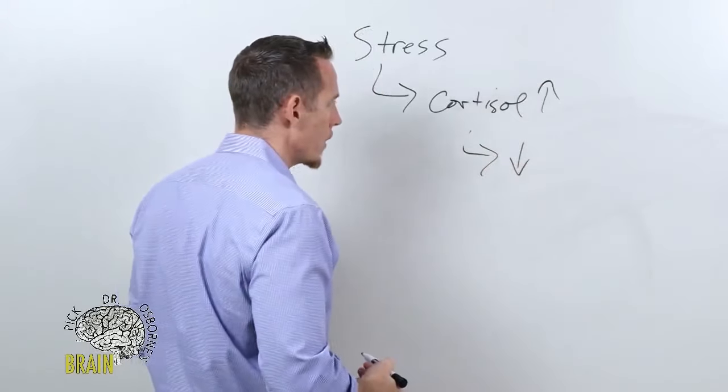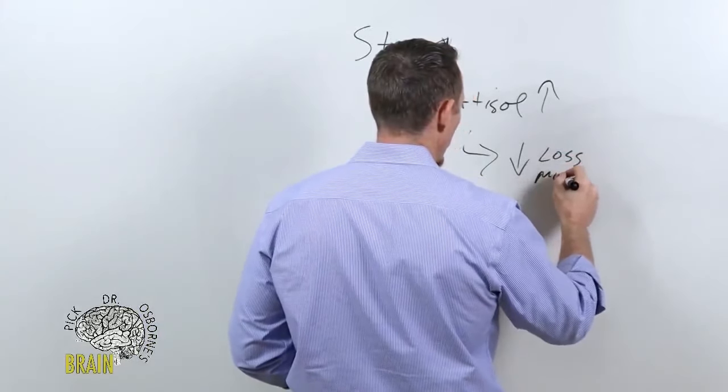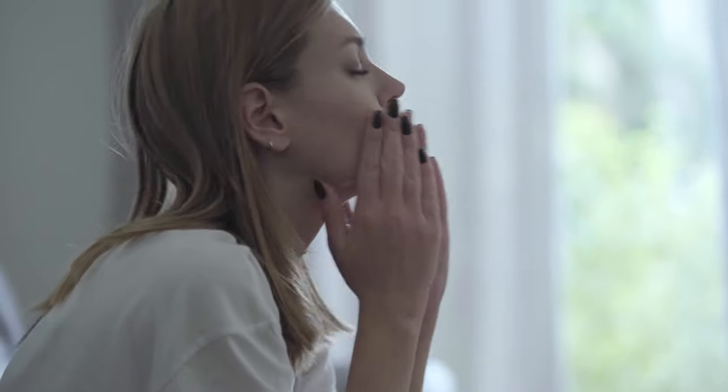Over time, when the stress becomes chronic, cortisol causes loss of muscle. So what's happening to many of you that are locked down is you've been overly stressed out, higher cortisol levels, you've lost some of your muscle mass which has reduced your metabolic rate.